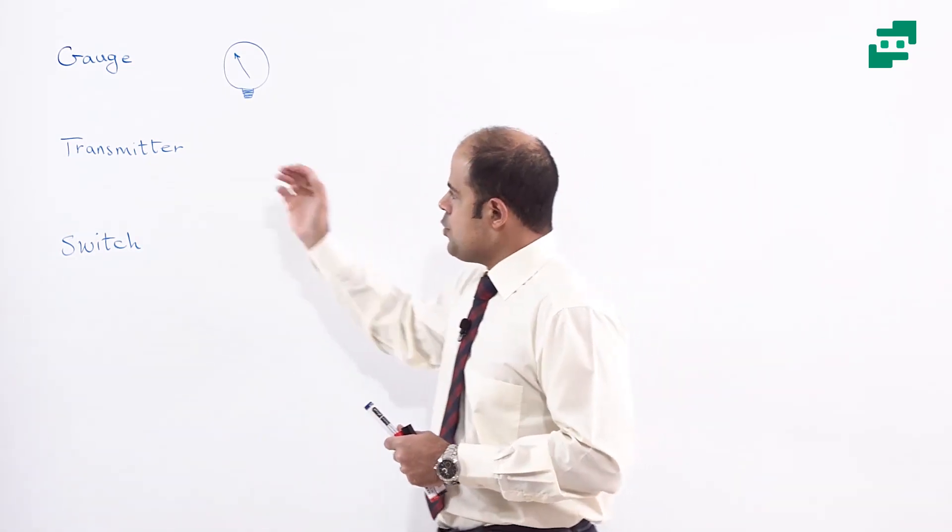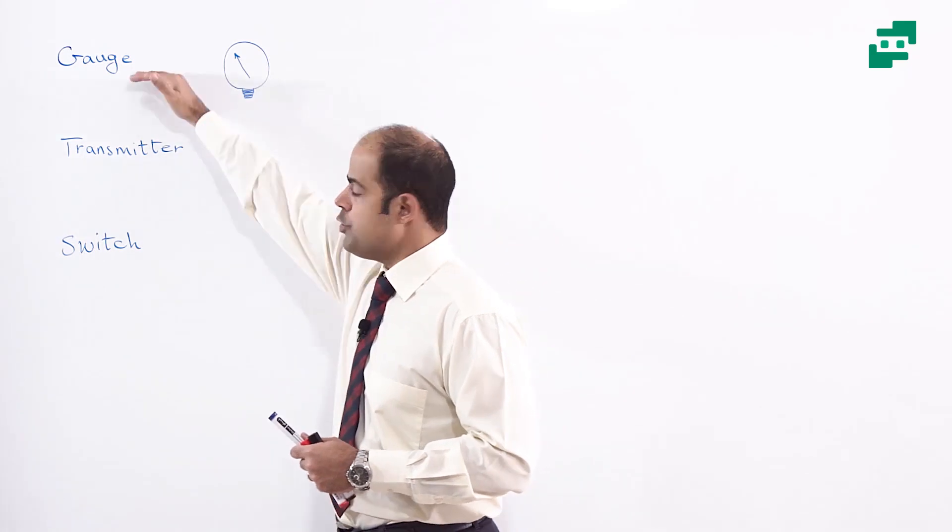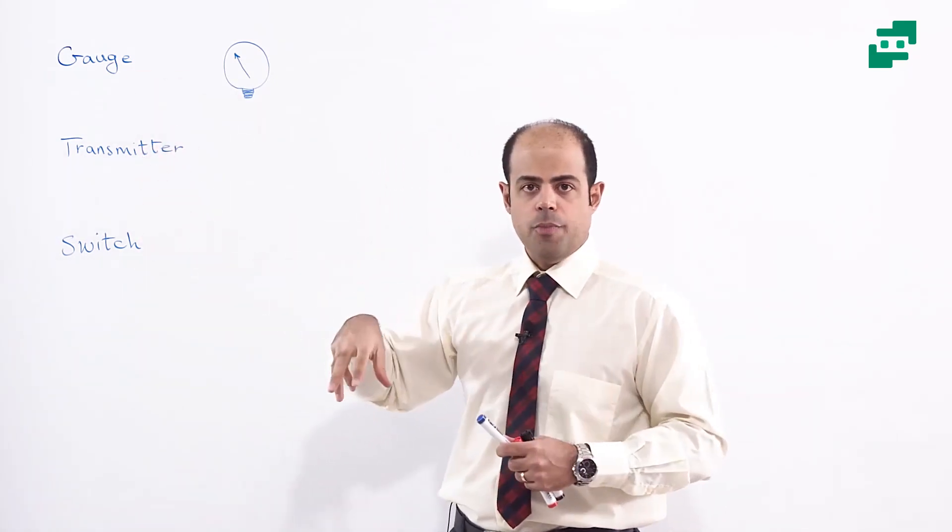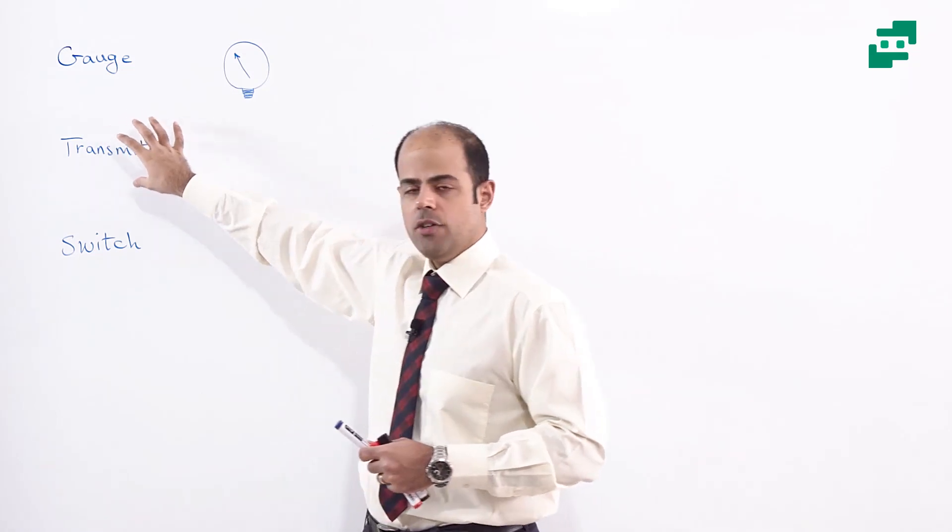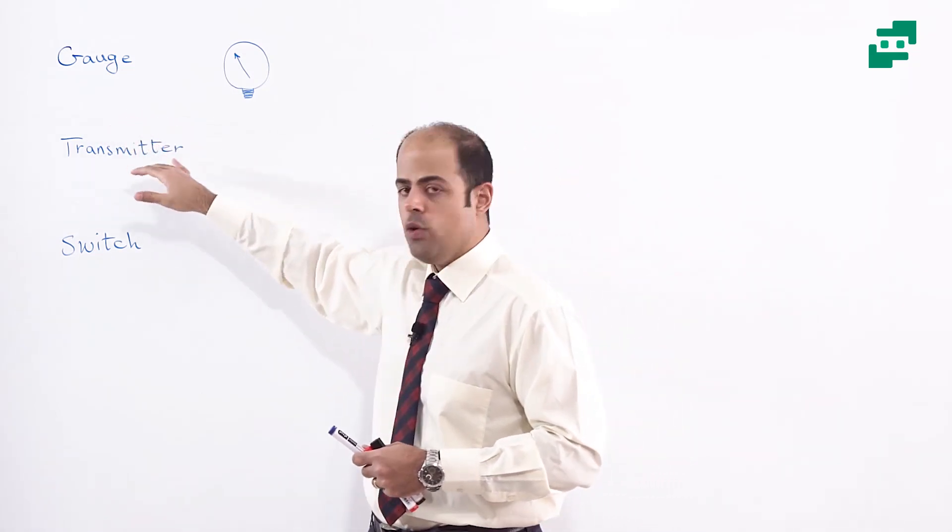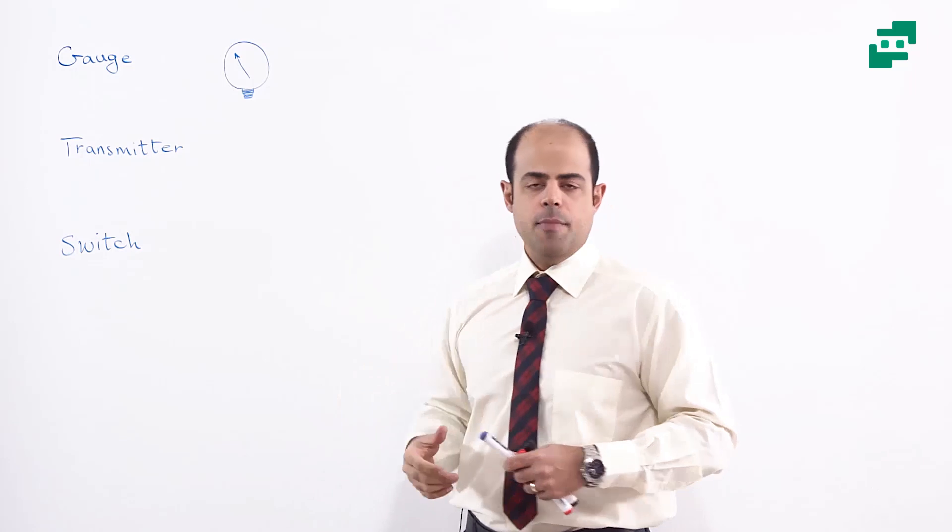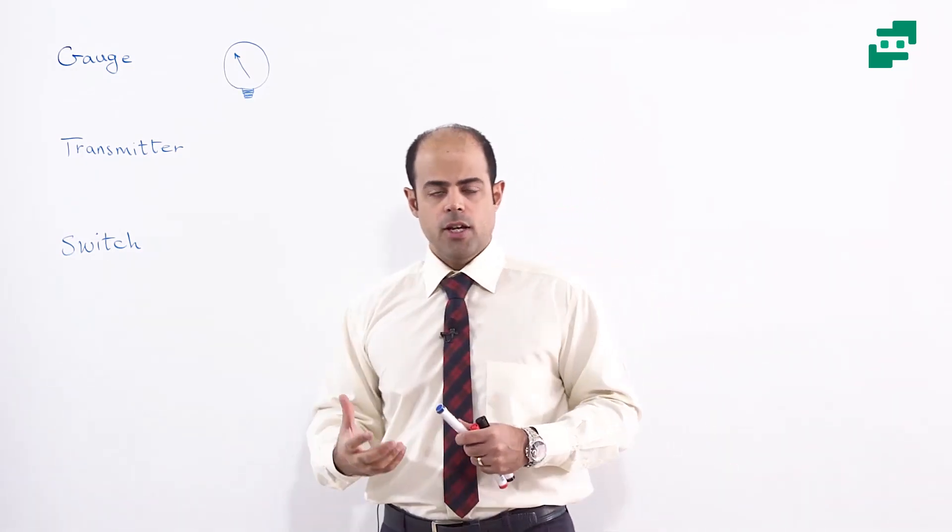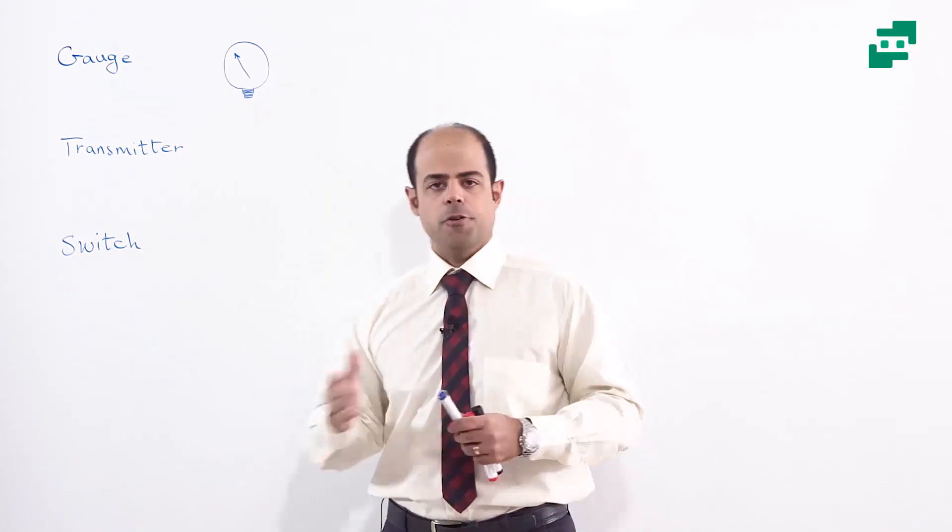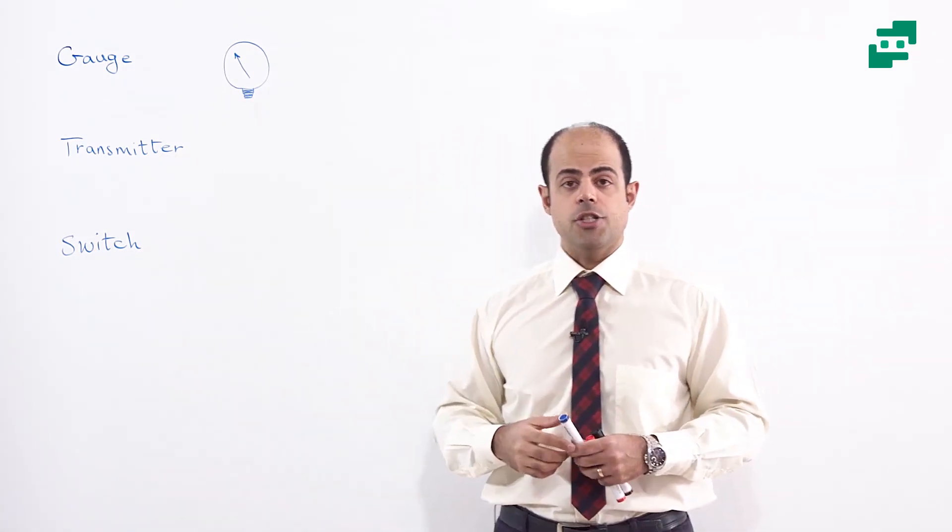So the next one, transmitter, is similar to the gauges based on its measurement and showing the amount. I mean it's a kind of system or tool or instrument that can show and measure the amount of physical parameters of a fluid. For example, it can be used for pressure, temperature, flow, and many other things.